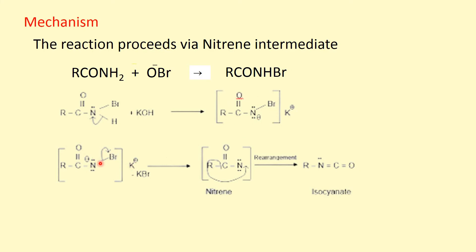Next, the bonded electron pair of nitrogen and bromine shifts to bromine, and bromine is removed as bromide ion, giving the nitrene species — RCO attached to nitrogen. This rearrangement takes place whereby the alkyl or aryl group attached to carbon shifts to nitrogen, and one lone pair of electrons of nitrogen forms a double bond between carbon and nitrogen. So we get the species R–N=C=O, that is alkyl or aryl isocyanate.